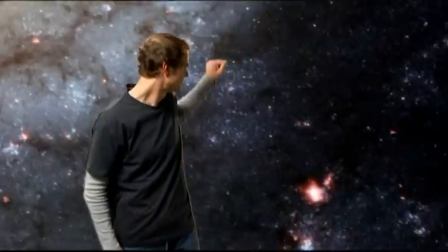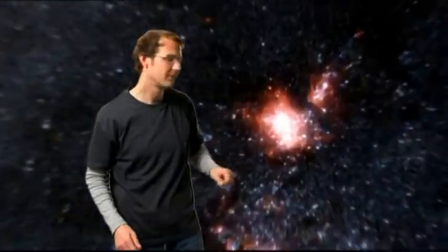The stunning new image also shows a sprinkling of bright red regions decorating the spiral arms. These are vast, relatively short-lived clouds of hydrogen gas, which glow due to the strong radiation from hot, young stars. Astronomers call these clouds H2 regions.